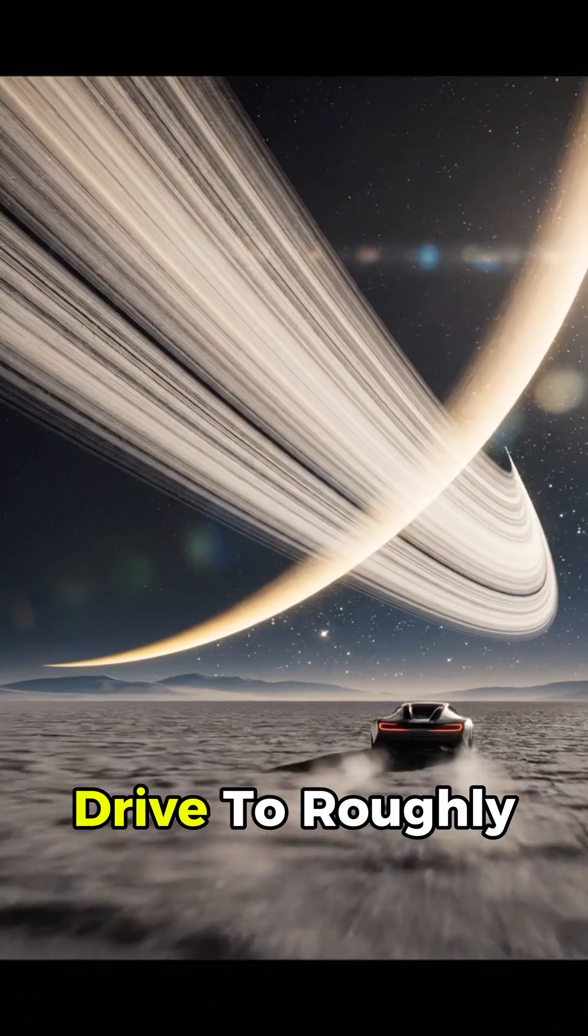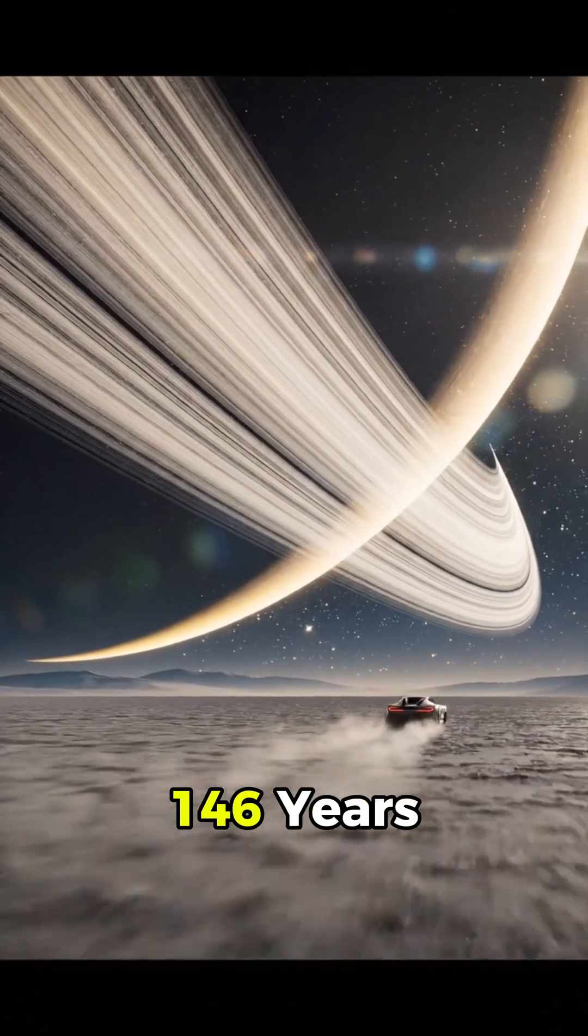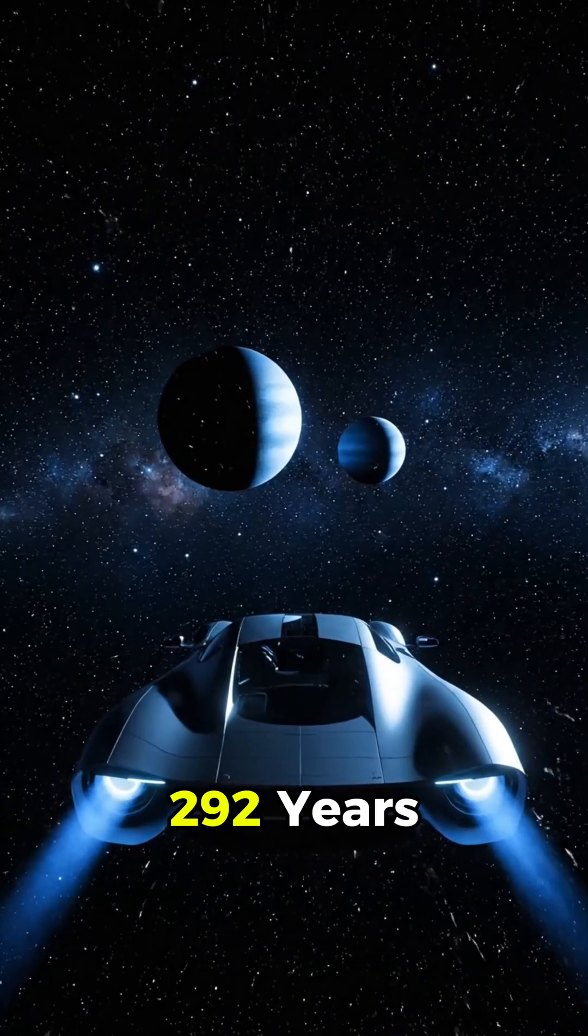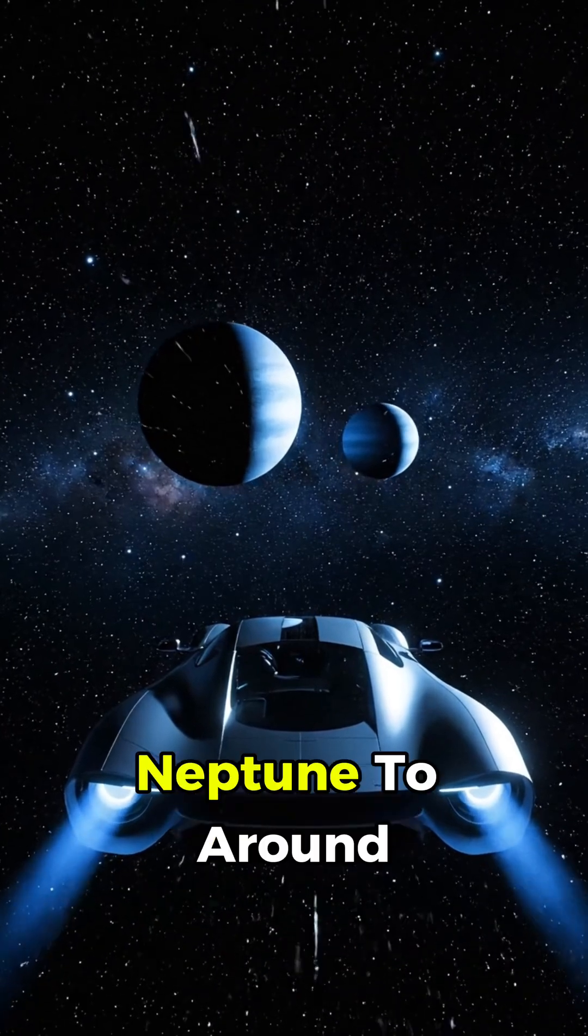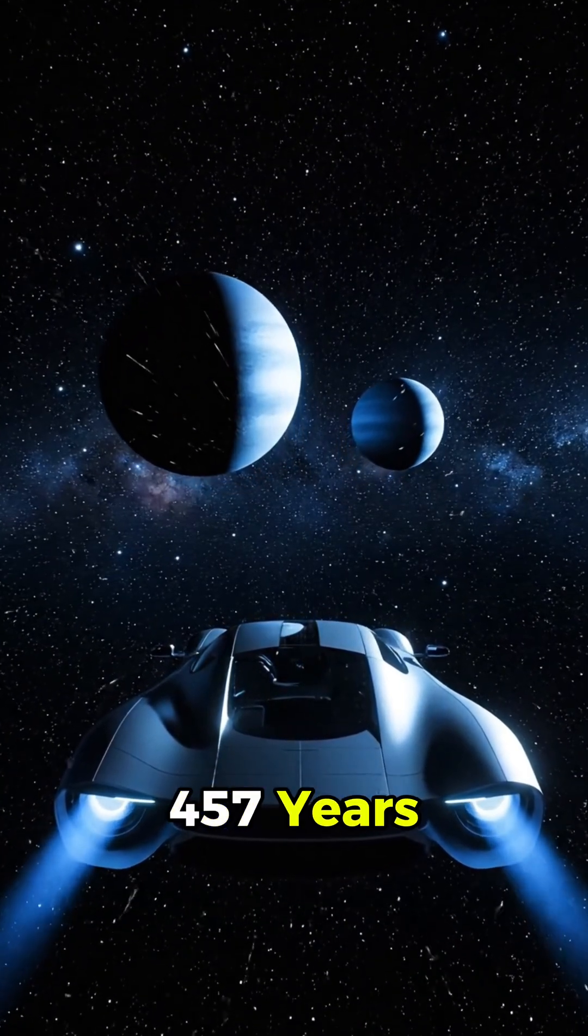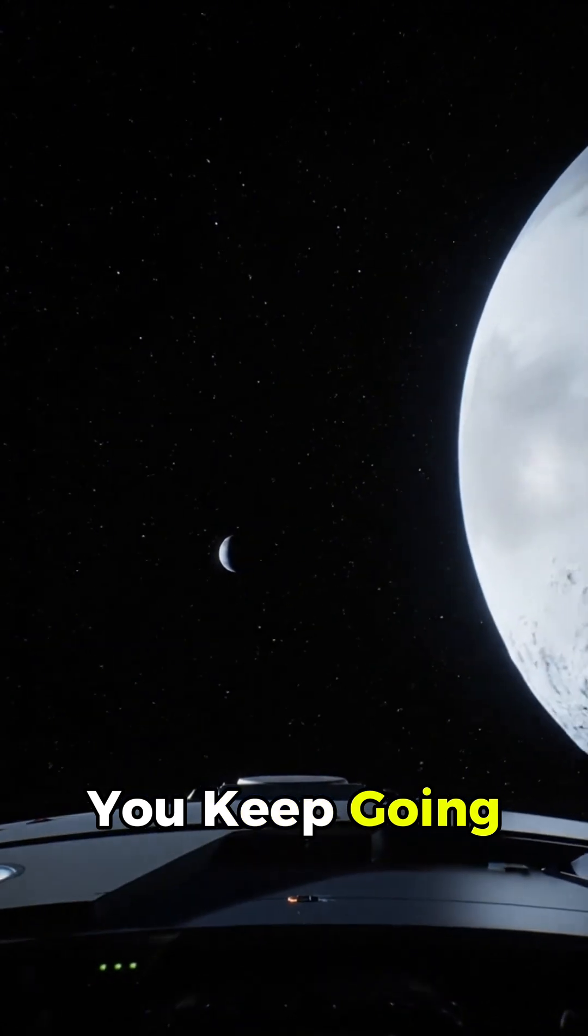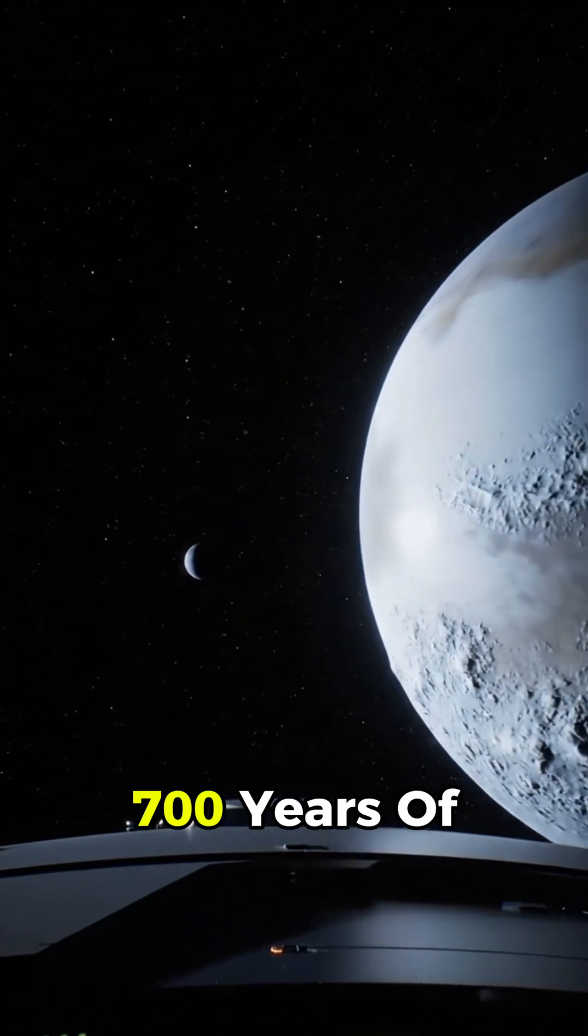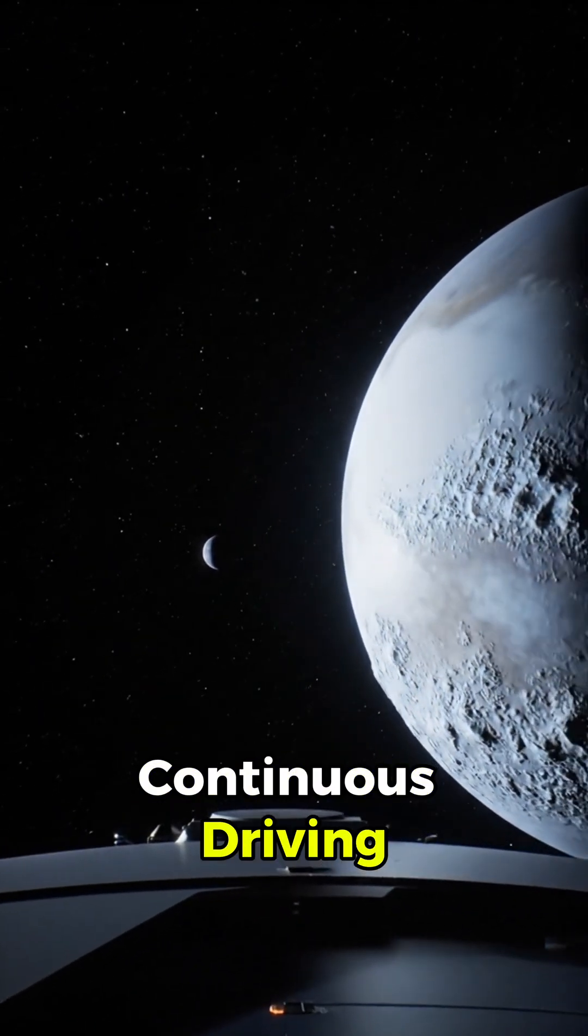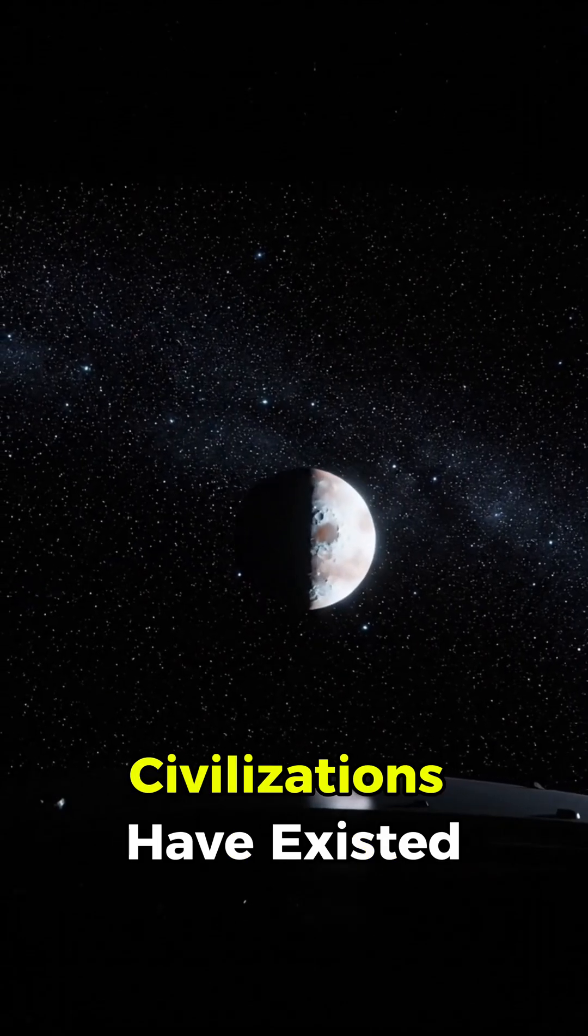Saturn stretches that drive to roughly 146 years, Uranus to about 292 years, Neptune to around 457 years, and Pluto, if you keep going, would require nearly 700 years of continuous driving, longer than most civilizations have existed.